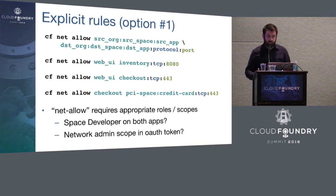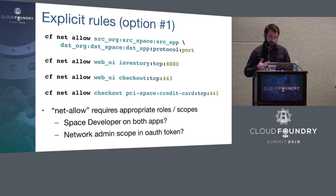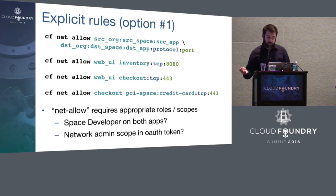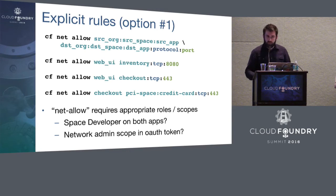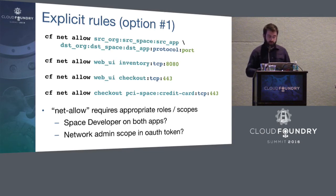Here's an example of how you might do explicit rules. The most generic case is some CF command-line thing that allows traffic from a source application in a space and org to another destination application in a space and org using a particular protocol and port. To make this concrete: I push a web UI app, an inventory app, and a checkout app that make some shopping cart experience. I explicitly allow traffic from the web UI to the inventory app, allow traffic from the web UI to checkout, and allow traffic from checkout to some credit card sensitive PCI thing that's maybe in a different space. Those three allow rules together let me run my complete web e-commerce application. There's a question of who should be allowed to write these allow rules.